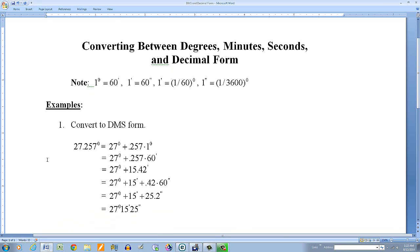So this one says convert to DMS form, that is degrees, minutes, and seconds. Here's what I have: 27.257°. I'm going to break that up into 27° + .257 × 1°. That's the same thing. That's what I have over here.